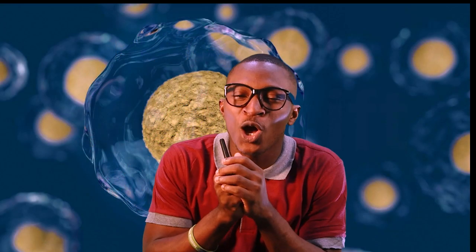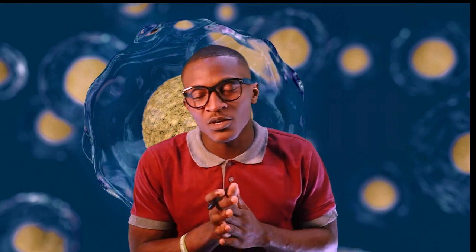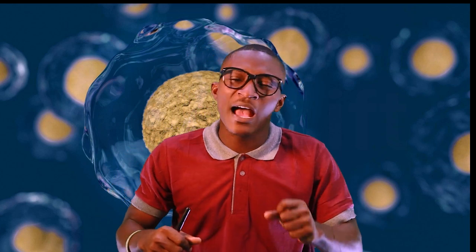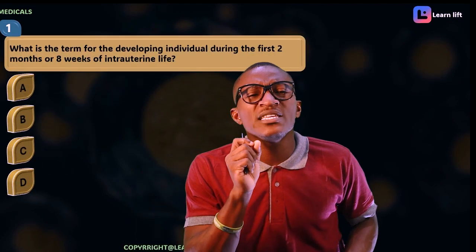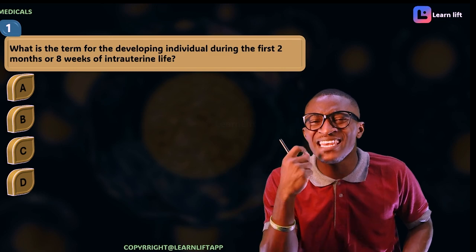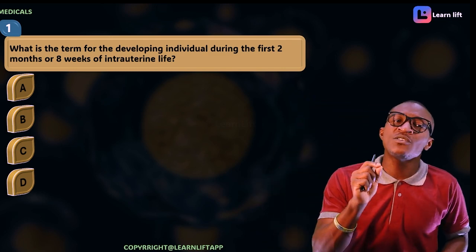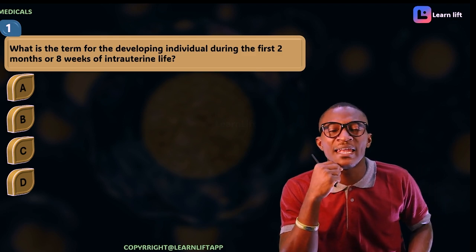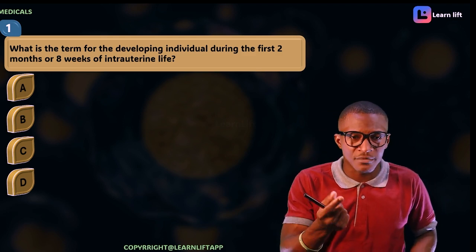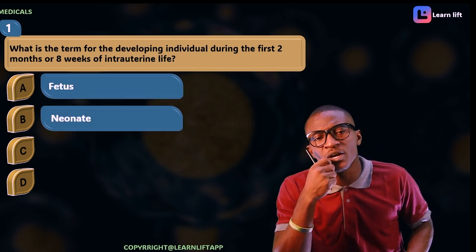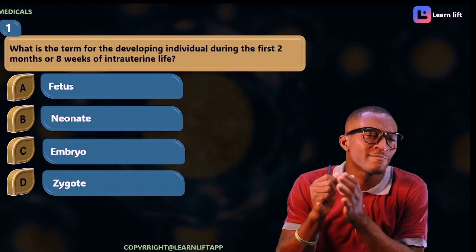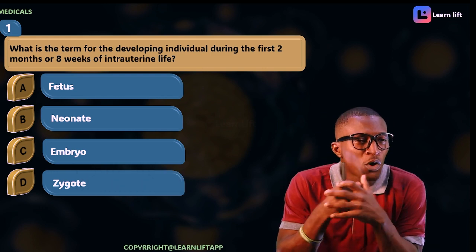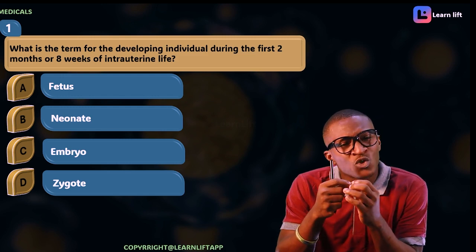Are you set for the top 20 questions? Now, without further introduction to embryology, let's take the top 20 questions. Remember, if you miss any question, we're going to review it. Are you set? Let's start. The first question says: what is the term for the developing individual during the first two months, or eight weeks, of intra-uterine life? Options are: blastospere, neonates, embryo, or zygote. Choose the answer.